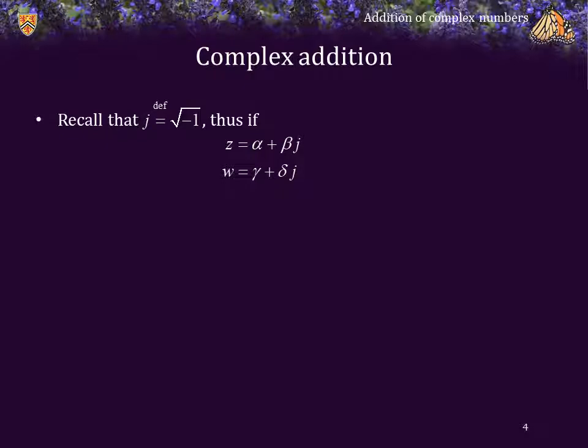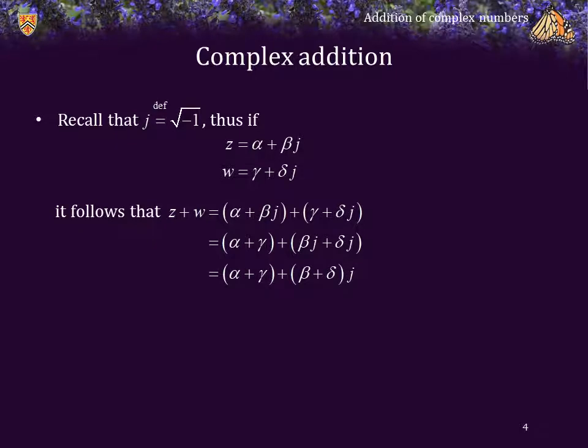So recall that j by definition is the radical square root of negative 1. So in the same way, if z is equal to alpha plus beta j, and w is gamma plus delta j, then the sum of these two complex numbers is nothing more than finding the sum of the constant coefficients and the sum of the radical coefficients. We can factor out a j, and thus we have our result.